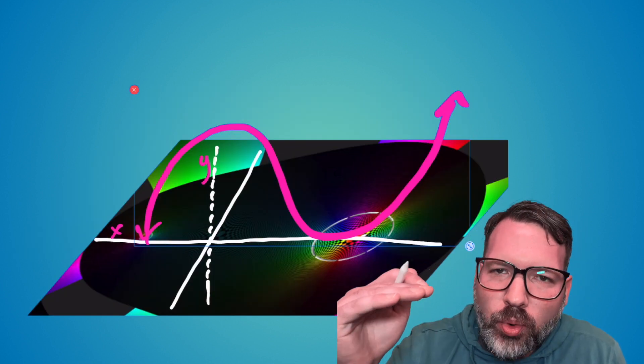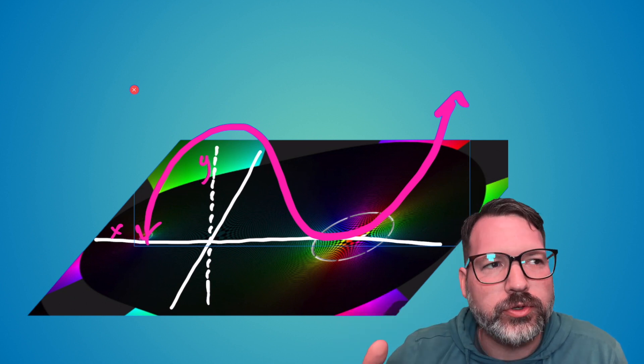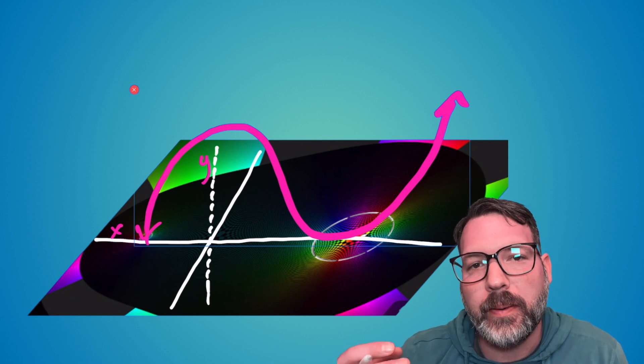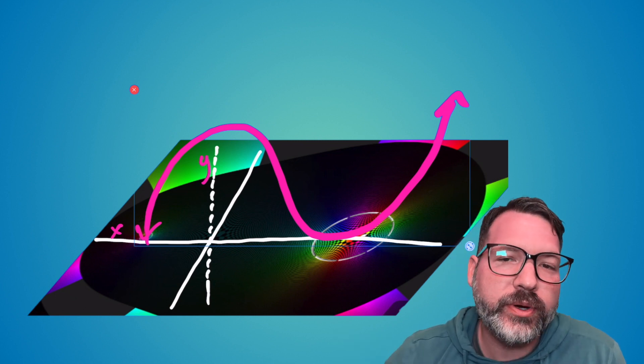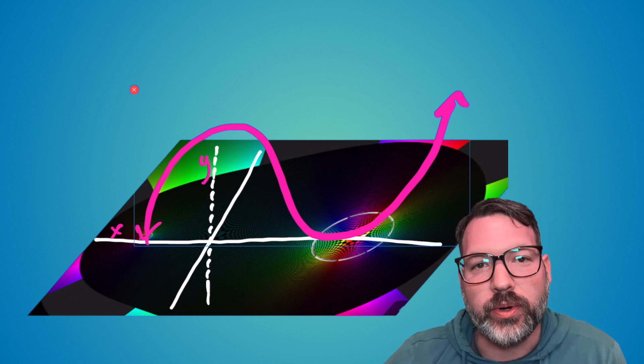But then remember, after we pulled it up a little bit more, something weird happened. Although we no longer had three real solutions, the fundamental theorem of algebra tells us we must still have three complex solutions. We will always have the same number of solutions in the complex numbers as the degree of our polynomial.